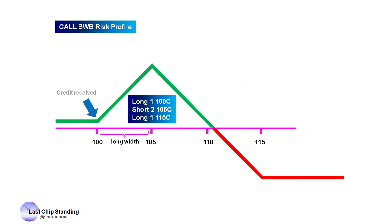At expiration, if the underlying is at 100 or lower, we will keep the credit we received when we put on the trade. No matter how low it goes — it could go to zero — we still get to keep the credit, since the 100 call option will expire worthless along with all the call options above 100.